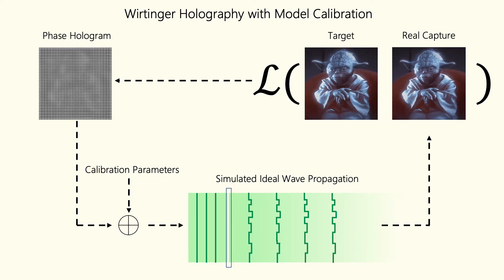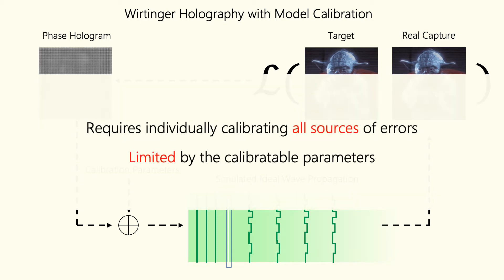One way of overcoming this is to calibrate for all the real-world deviations and use this calibrated model to generate holograms. Although it doesn't work as well as having an active camera in the loop, it can suppress many real-world artifacts. Unfortunately, this method requires identifying and calibrating every individual source of error, making it challenging and fundamentally limited by the calibratable parameters.